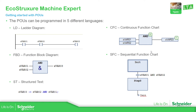We can see the different visualizations we have for different code in the different languages available in the software. The standard one is the ladder, where you can see the contacts and coils. Another language is the FunctionBlock diagram, which is similar to CFC, but the difference is that the code is in ranks similar to ladder, and here you can specify the ordinal execution. We also have structured text, SFC (sequential function chart), which is similar to Grafcet. These are the languages we have in the software.